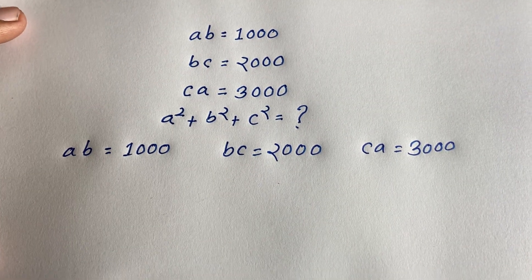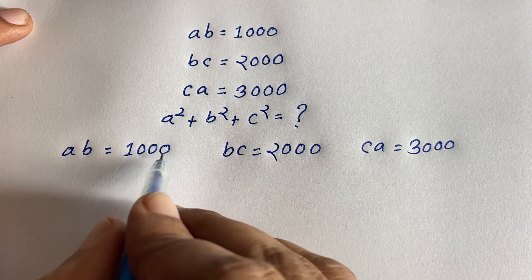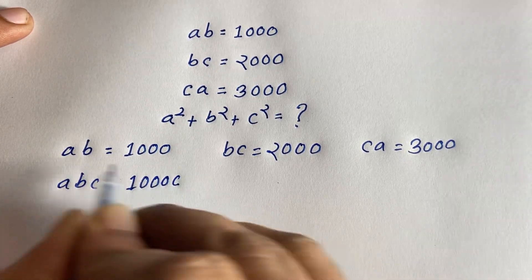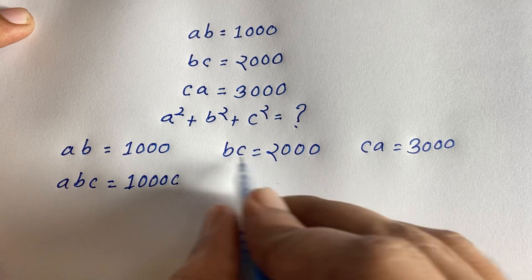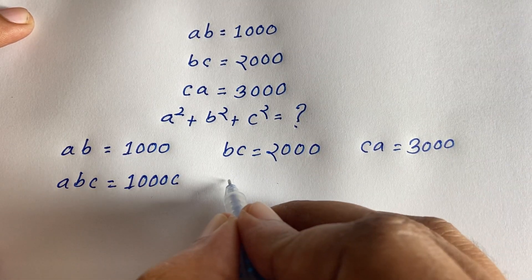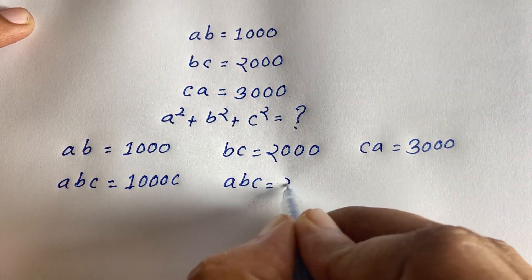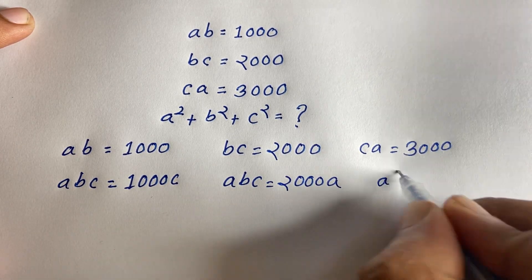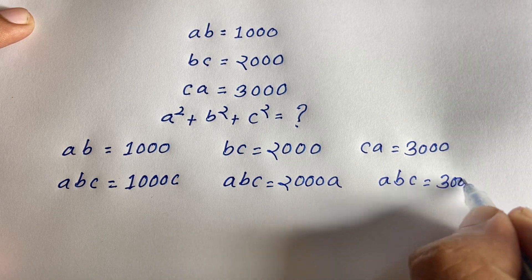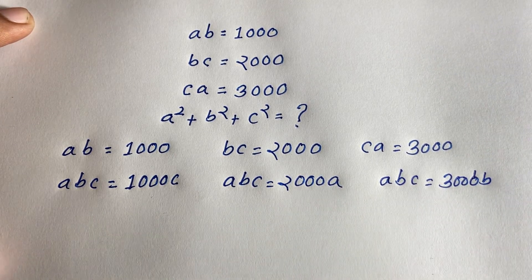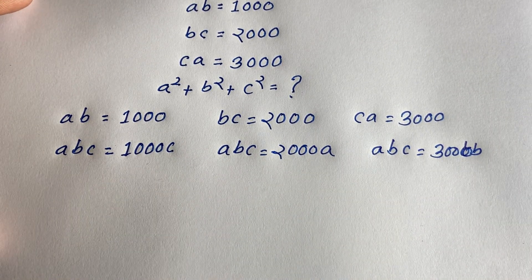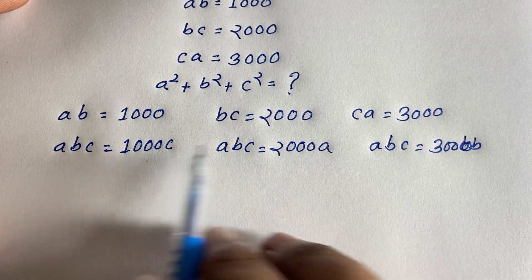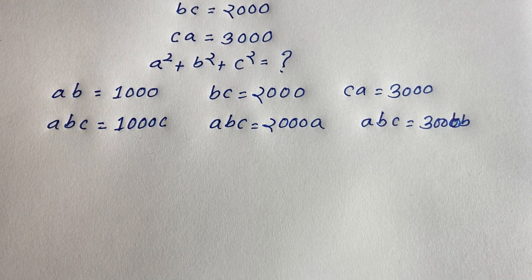Now I multiply both sides of the first equation by c, so it becomes a·v·c = 1000c. Then I multiply the second equation by a, giving a·v·c = 2000a. Then multiplying the third equation by v gives a·v·c = 3000v. You can see easily that all three left-hand sides equal a·v·c.